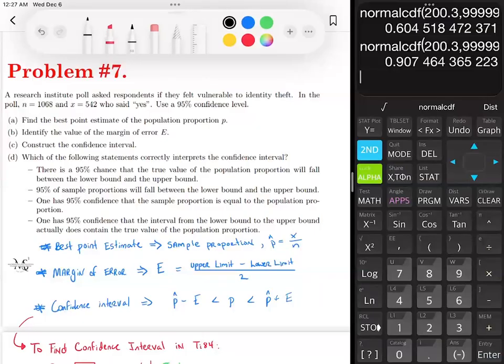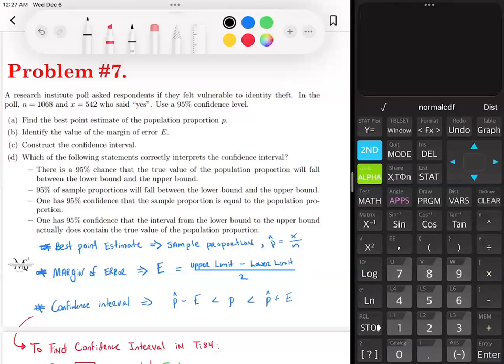All righty students, so in problem number seven, what we're going to do is compute a confidence interval. The situation states that a research institution poll asks respondents if they felt vulnerable to identity theft.